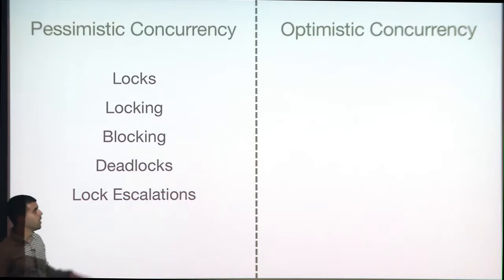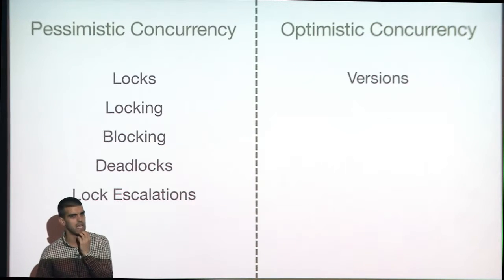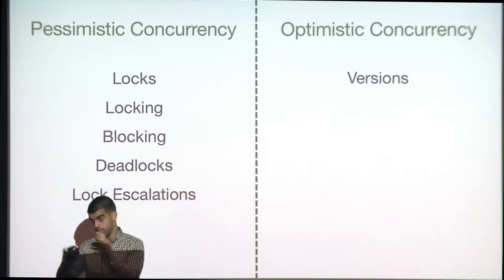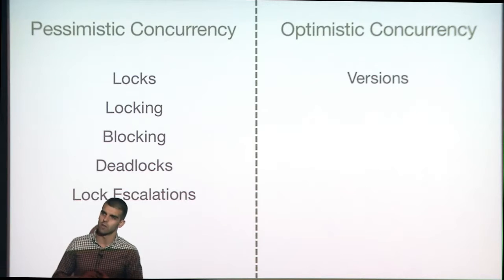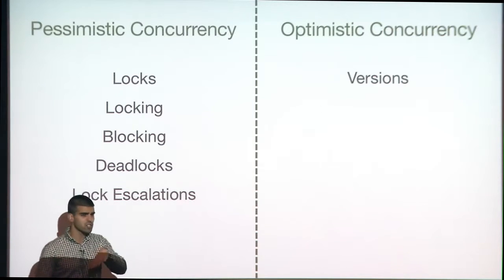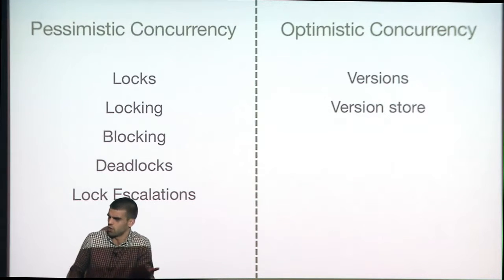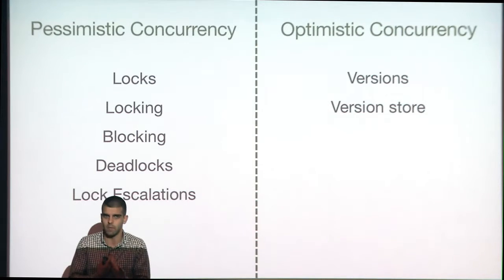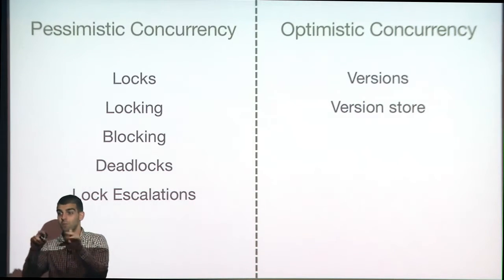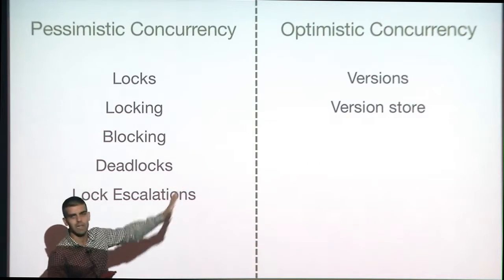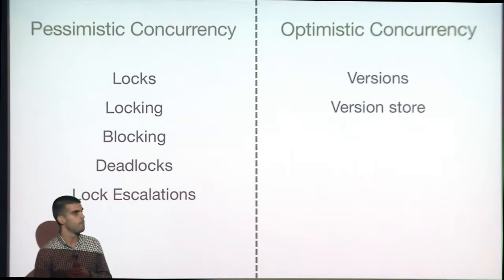In the optimistic concurrency world, we have something called versions of the data. These are versions of the previously committed data, and they're stored in the version store, which is located inside TempDB. At the moment we switch to an optimistic concurrency isolation level, we immediately have more TempDB activity going on.